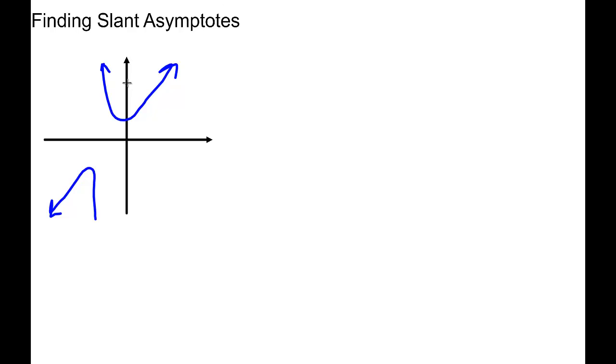What you have here is you have more than just a vertical asymptote. The vertical asymptote would occur somewhere over here, with some intermediate behavior on either side of the asymptote.